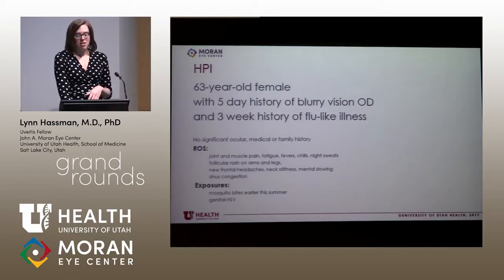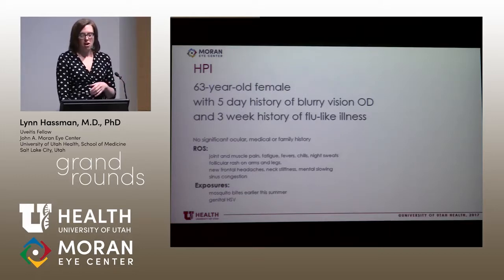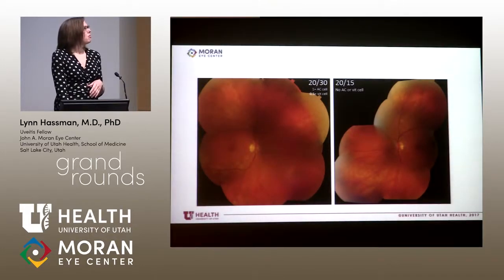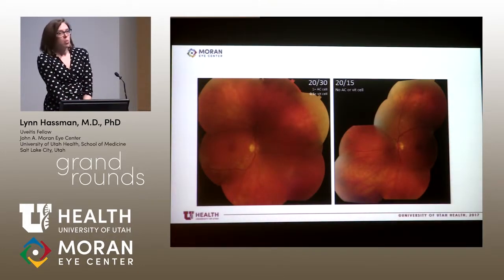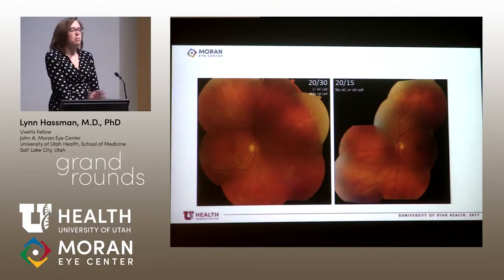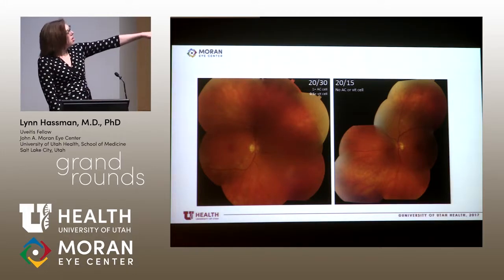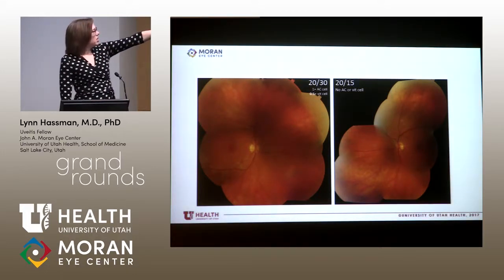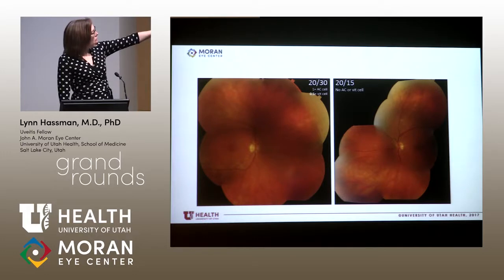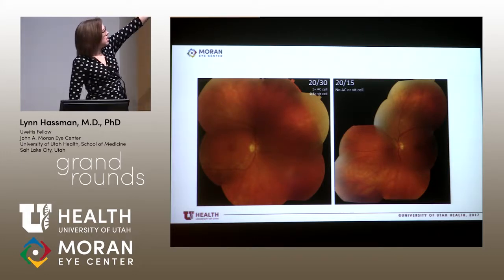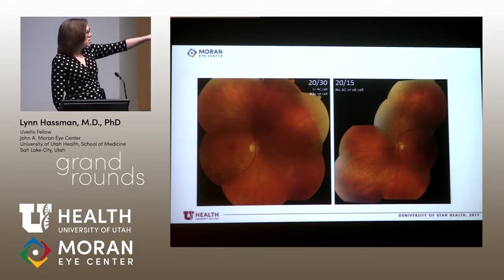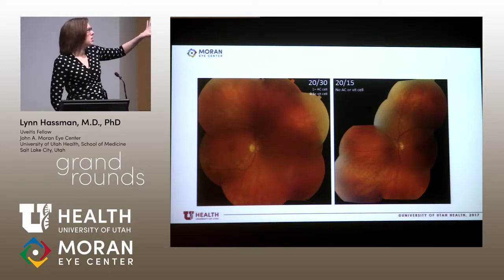Her exposure history is significant for mosquito bites earlier this summer — this patient presented in the fall — and general HSV. In the right eye, her vision is 20/30. There's 1+ AC cell and a little bit of vitreous cell. In the right fundus, you can see round white lesions along the arcades extending up above and down below, with some intraretinal hemorrhages in the peripheral macula.